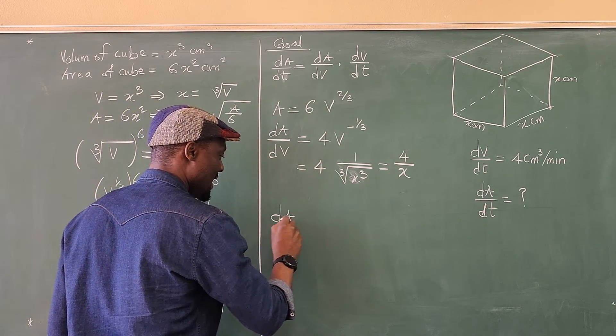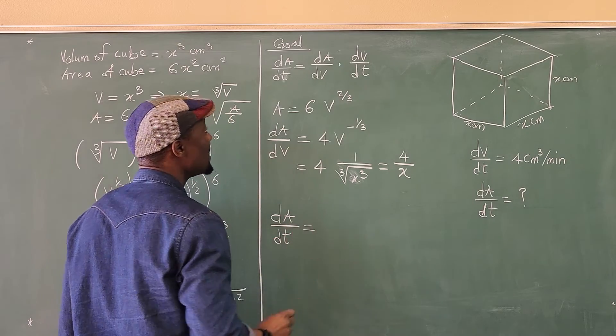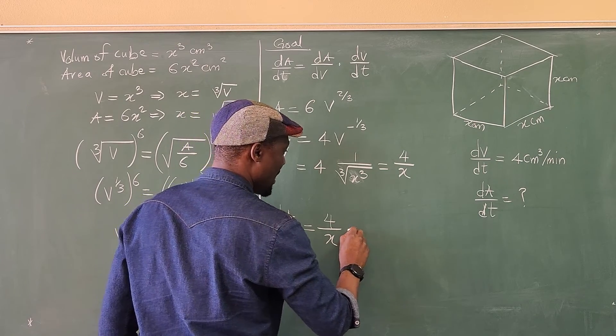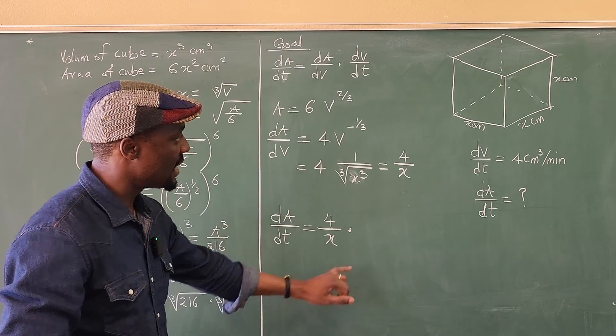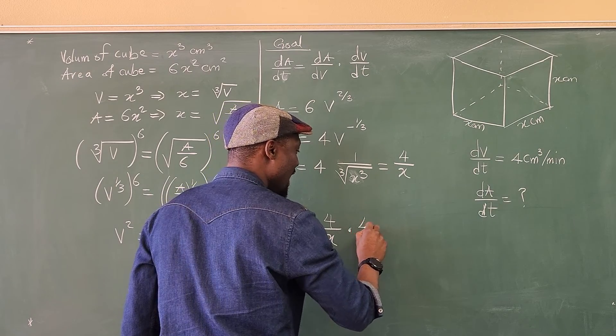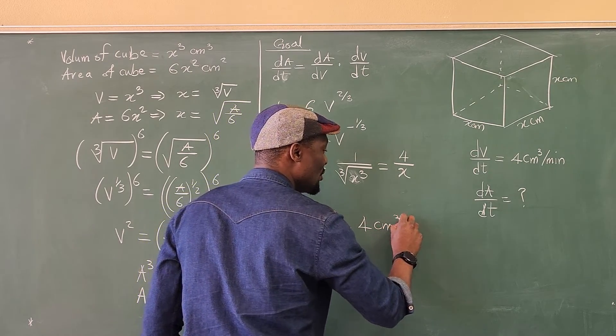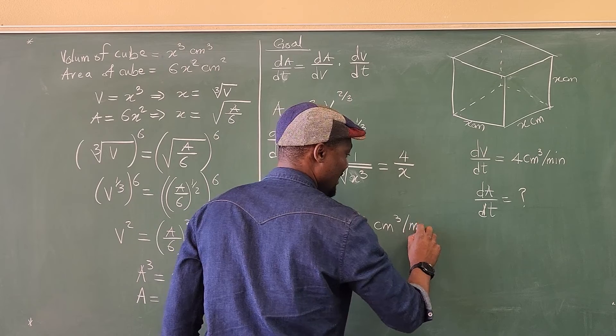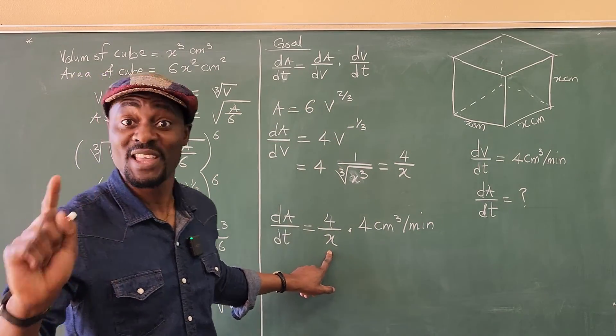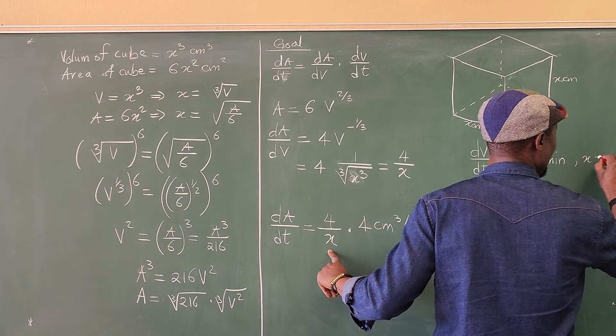We know now that dA/dT is equal to dA/dV, which is four over x multiplied by dV/dT. What's dV/dT? It's four centimeters cubed per minute. And what did we say x was at this point when x is equal to three? That's what the question told us. x equals three.